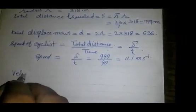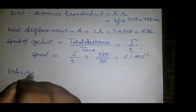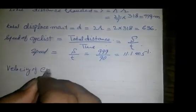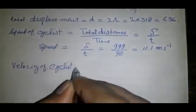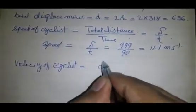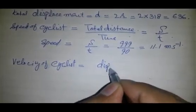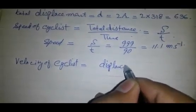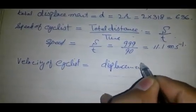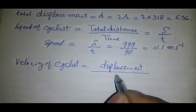Velocity of cyclist equals displacement over time.